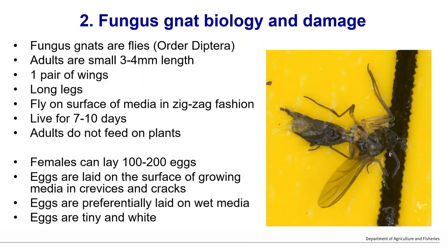Fungus gnats are flies from the order Diptera, same as mosquitoes and house flies. They only have one pair of wings, are about three to four millimetres long, and zigzag around your production nursery. Adults tend to live for seven to ten days and don't feed on plants. Most people in production nurseries are familiar with recognising them.